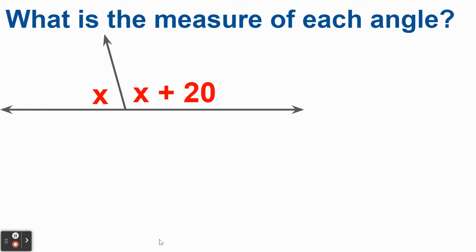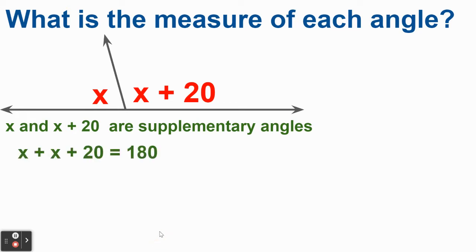And together, they need to add to 180. So that's why we say, again, what are they? They're supplementary angles. They add to 180. Well, let's take a look. That just means that if I add them up, I should get 180 degrees.